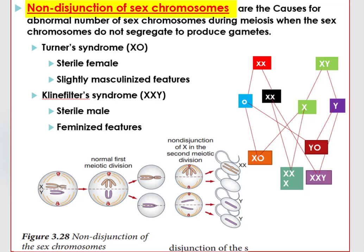One such mutation is non-disjunction of sex chromosomes, which causes an abnormal number of sex chromosomes during meiosis when the sex chromosomes fail to segregate properly to produce gametes. Since it is the presence or absence of the SRY gene that determines sex, individuals with only one X chromosome and no Y chromosome, written as X0, have what we call Turner syndrome. This individual is a sterile female who slightly shows masculinized features.